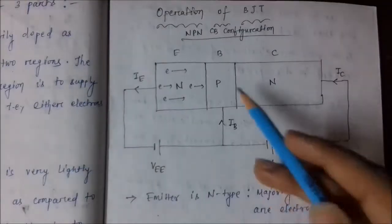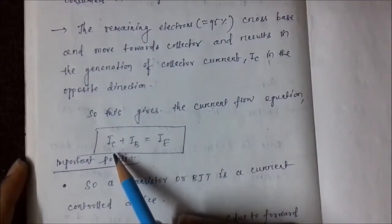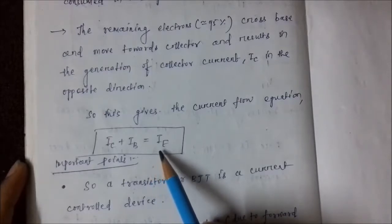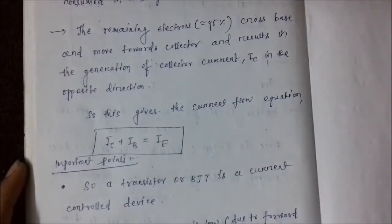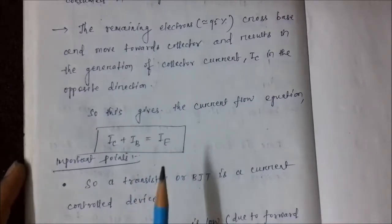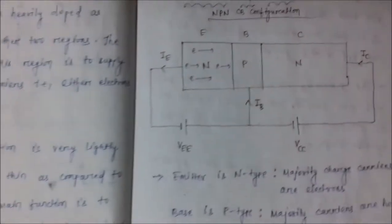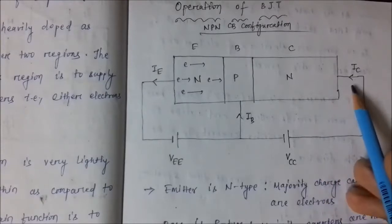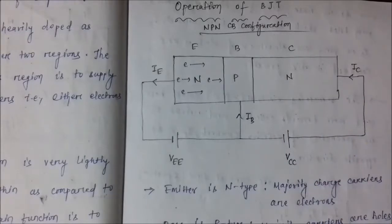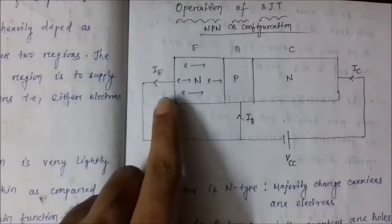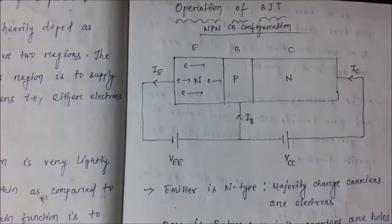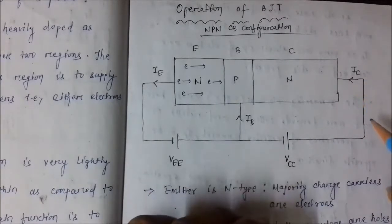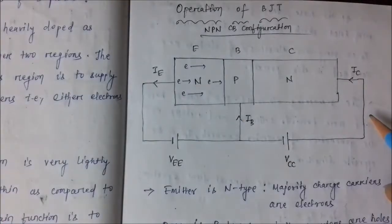When we apply KCL, we get the equation: the summation of collector current and base current equals emitter current — Ic plus Ib equals Ie. In NPN transistors, the collector current and base current are directed towards the transistor, whereas the emitter current is directed away from the transistor. In PNP it is opposite — Ic and Ib move away from the transistor and Ie moves towards it, as holes are involved.